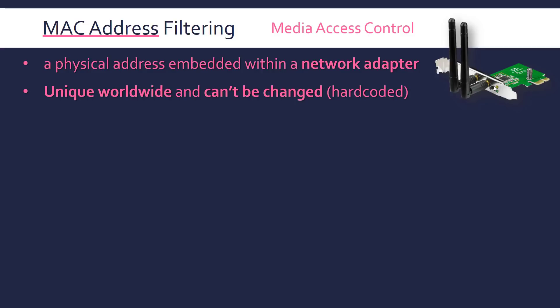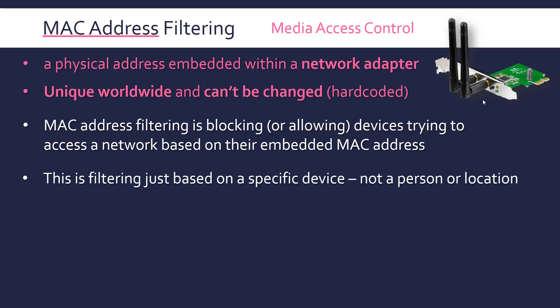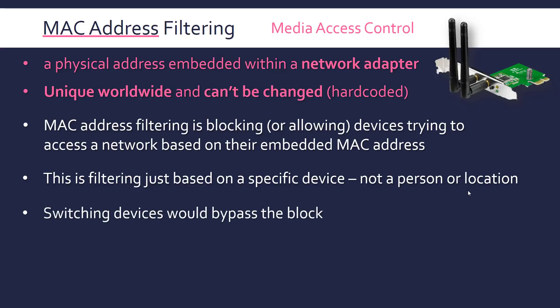MAC address filtering means blocking or allowing devices trying to access a network based on their MAC address. A MAC address is used in network protocols to locate a device on an individual local network. So instead of filtering on a particular region like an IP address does, this filters based on a specific device — or more precisely, a specific network adapter. This makes it a slightly weak method, though people occasionally still use it.